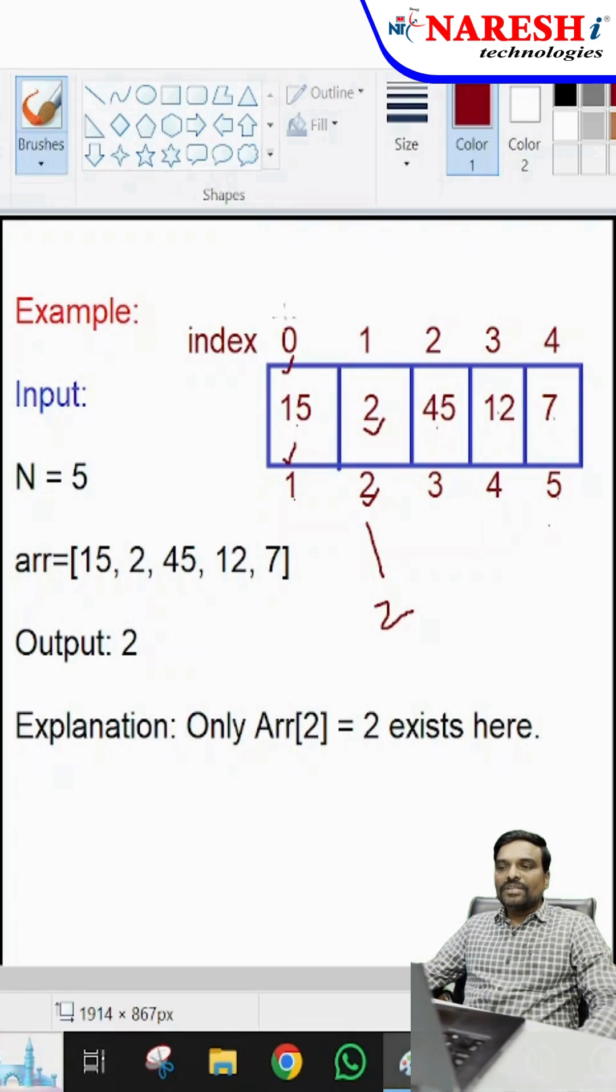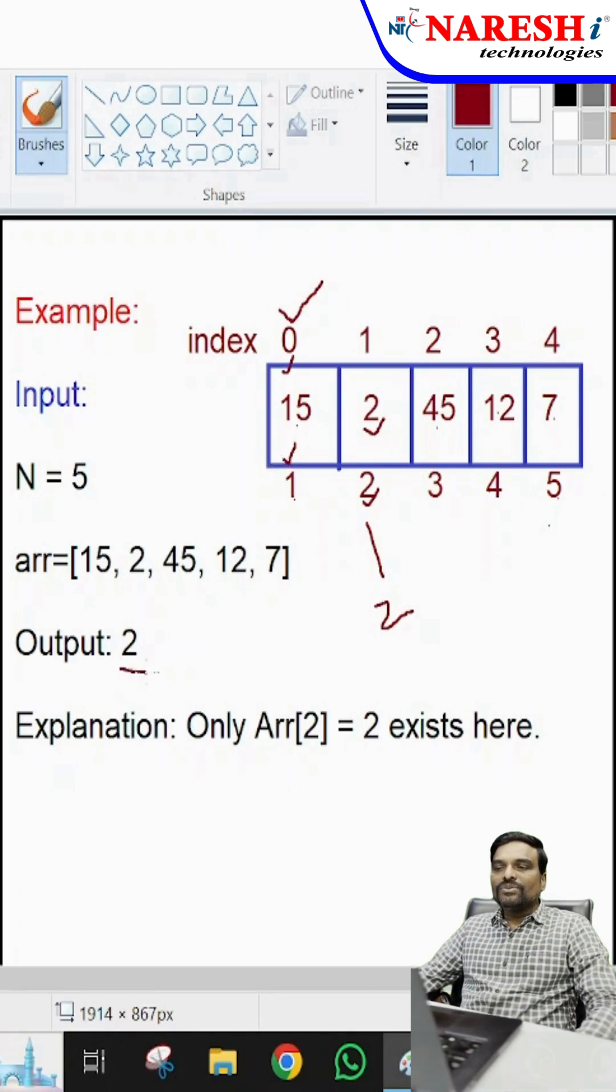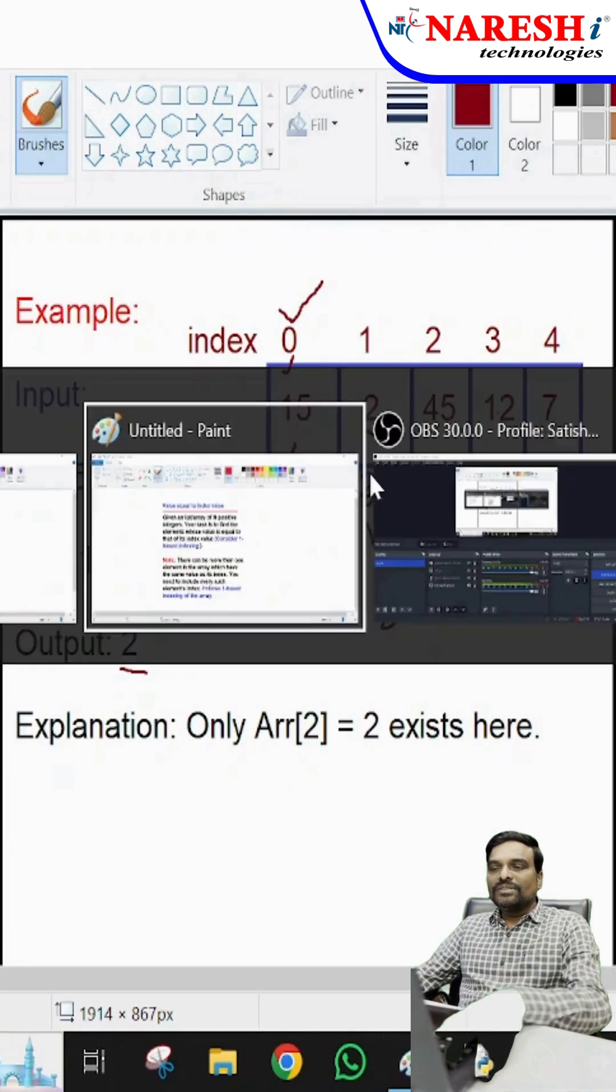We need to read the elements using zero-based indexing but compare using 1-based indexing. In this example, the output is 2 because the value and index are both the same. Now let us see the problem coding.